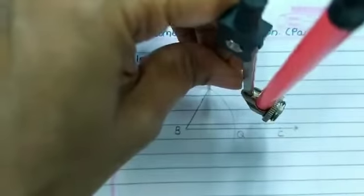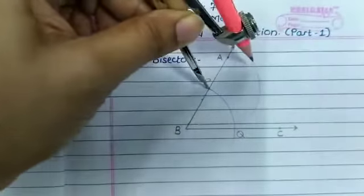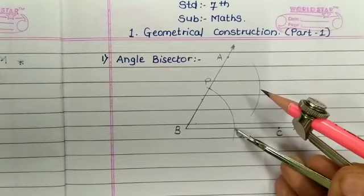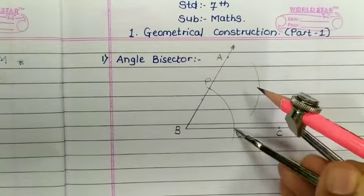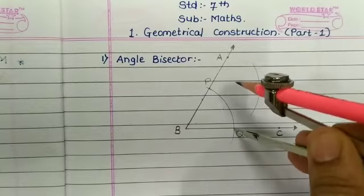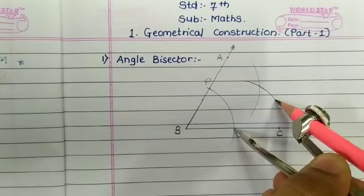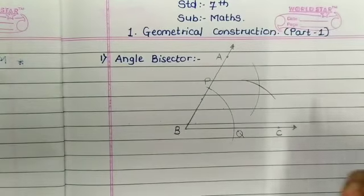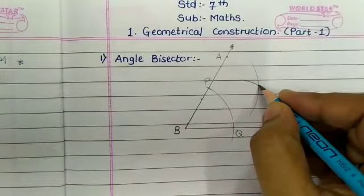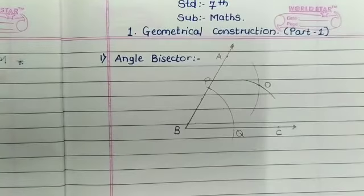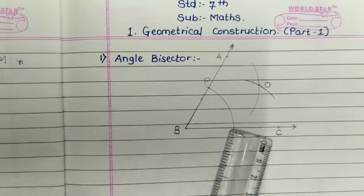Using a convenient radius, draw an arc in the interior of the angle like this. Similarly, place the steel head of the compass at point Q and with the same radius, draw an arc to intersect the previous arc at point O. This intersection point of the two arcs is O. Now draw ray BO.